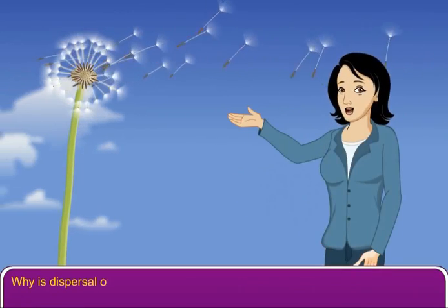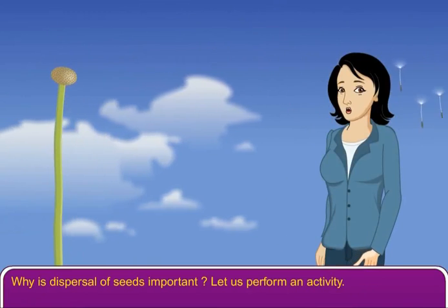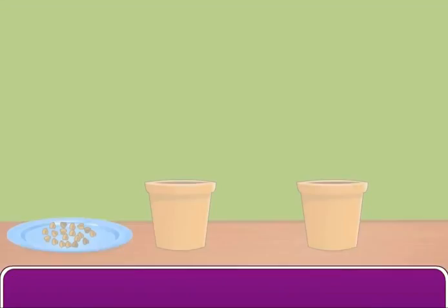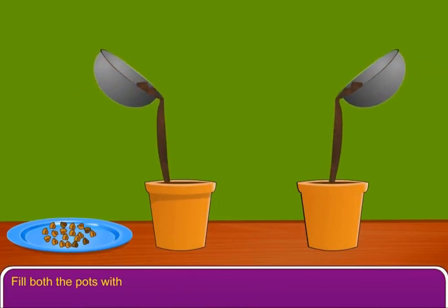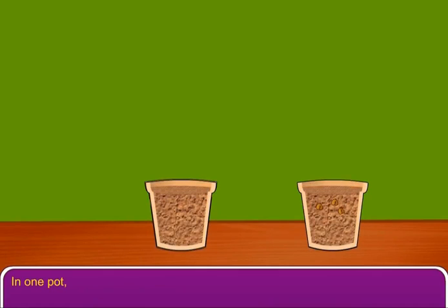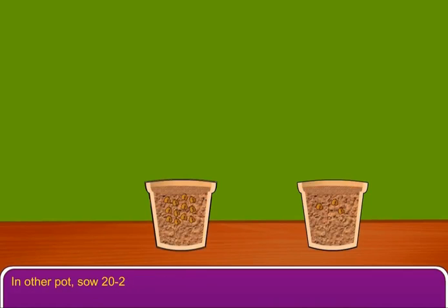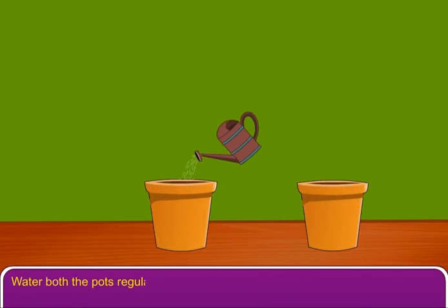Why is dispersal of seeds important? Let us perform an activity. Take a few gram seeds and two pots. Fill both the pots with garden soil. In one pot, sow two or three seeds only. In the other pot, sow 20 to 25 seeds very close to each other. Water both the pots regularly.